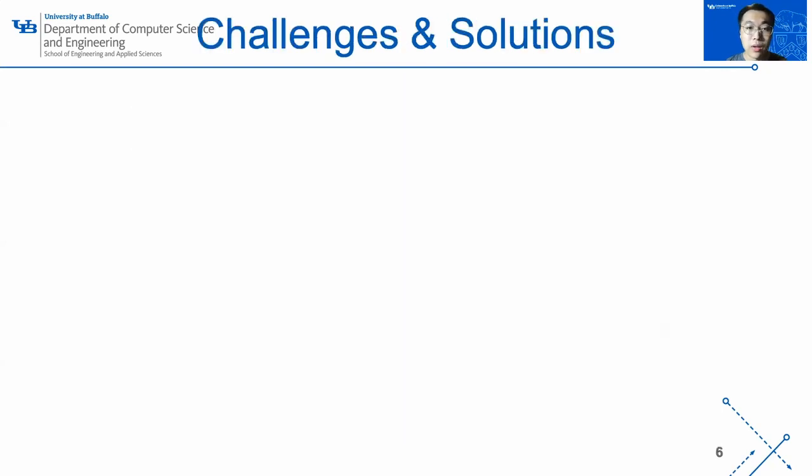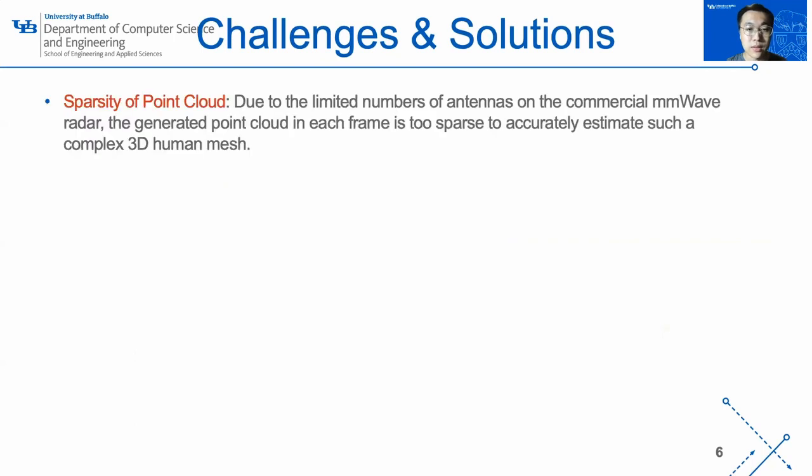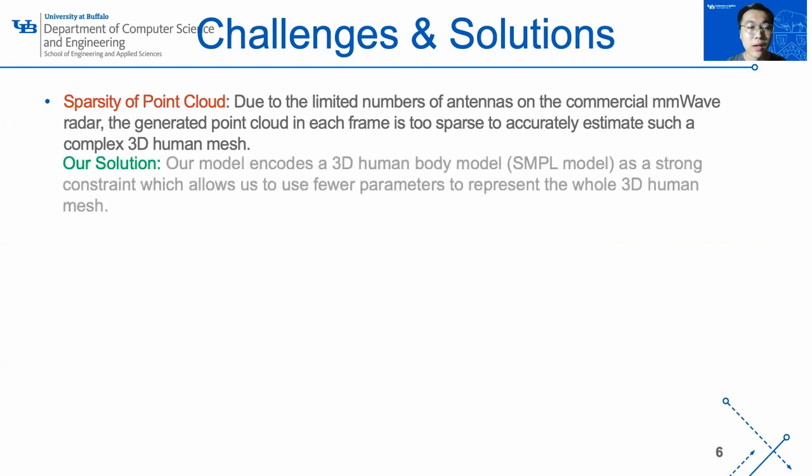To achieve our goal, we need to tackle the following challenges. The first challenge is the sparsity of the point cloud. Due to the limited number of antennas on the commercial mmWave radar, the generated point cloud in each frame is too sparse to accurately estimate such a complex 3D human mesh. Our solution is to encode a 3D human body model as a strong constraint, which allows us to use fewer parameters to represent the whole 3D human mesh.